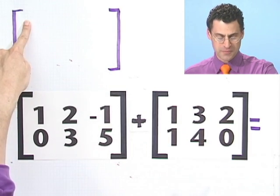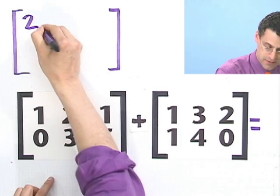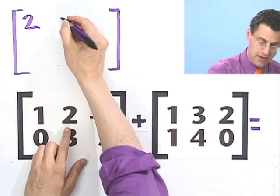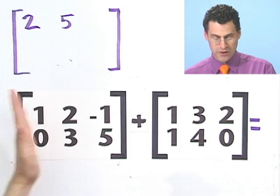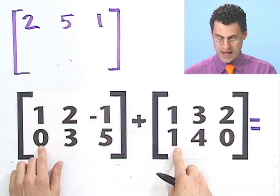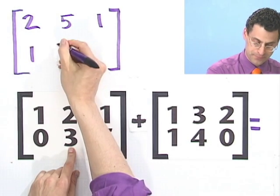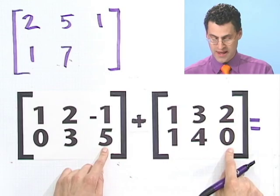You just add the elements in the first spot. So that would be a two in this case. Here you'd add the elements in this spot, which would give you a five. In the one three position, you'd add those elements and see a one. Here you'd add and see a one. Here you'd add and see a seven. And here you'd add and see a five.